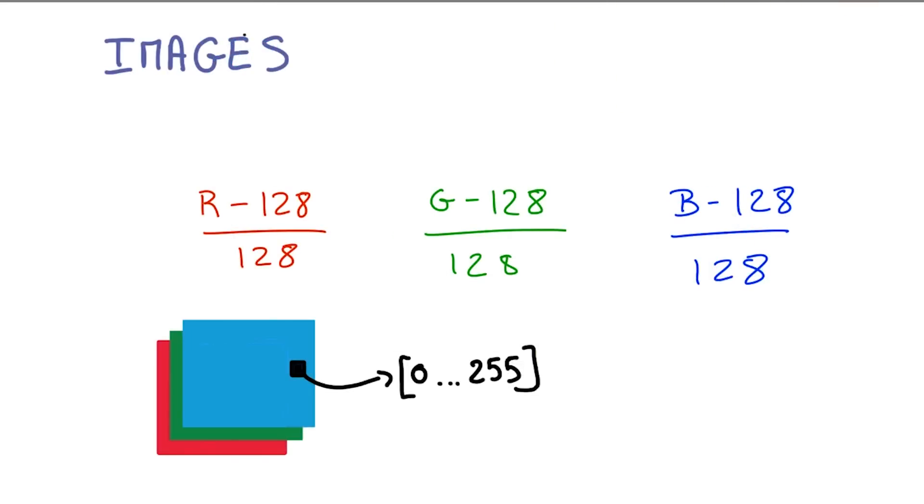If you're dealing with images, it's simple. You can take the pixel values of your image, that are typically between 0 and 255, and simply subtract 128 and divide by 128. It doesn't change the content of your image, but it makes it much easier for the optimization to proceed numerically.